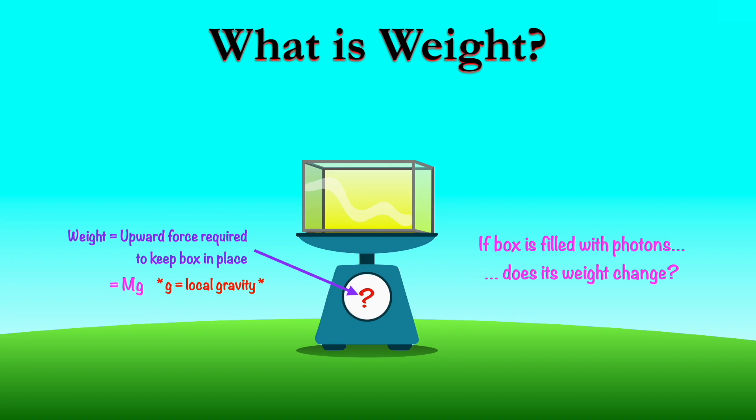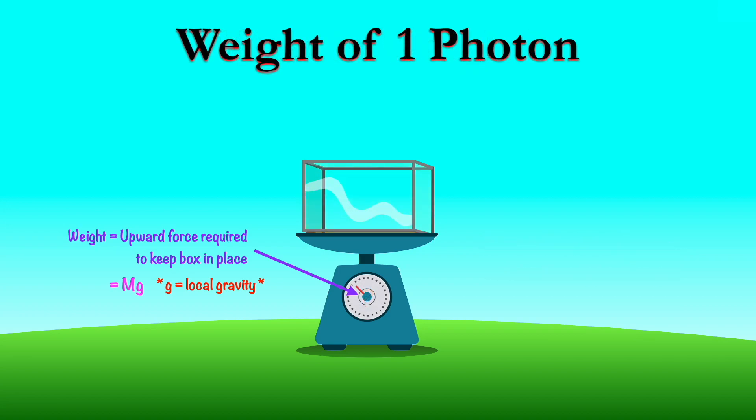To answer this question, we'll start off by asking, how does the weight change if you just have one photon? So let's imagine a photon travels from the top of the box to the bottom of the box, and it's got some energy E. Well photons don't only carry energy, they also carry momentum. And the momentum of a photon is its energy divided by the speed of light.